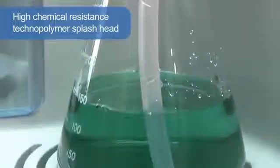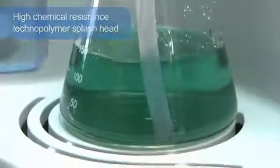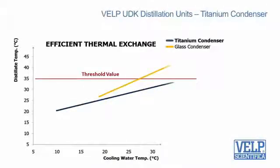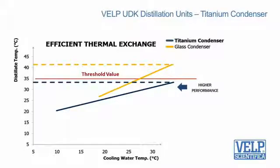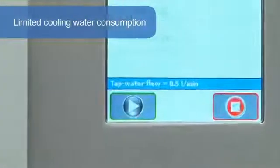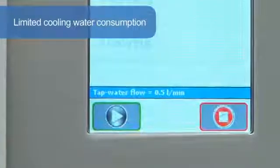The high-chemical resistance technopolymer splash head is the most resistant solution available. Another exclusive key component is the titanium condenser, one more patented solution. It guarantees that the distillate temperature always remains below the threshold value for total nitrogen recovery. In addition, the cooling water consumption is really low, starting from only 0.5 litres per minute.